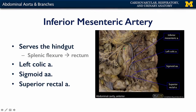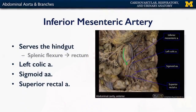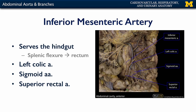Here is the abdominal aorta and the inferior mesenteric artery. The inferior mesenteric artery serves the embryonic hindgut and its derivatives — everything from the splenic flexure of the transverse colon through to the rectum. There is a left colic artery supplying the descending colon, sigmoidal arteries supplying the sigmoid colon, and a superior rectal artery supplying the superior rectum. The marginal artery can be seen hugging the margins of the colon, providing anastomosis between branches of the IMA and SMA.